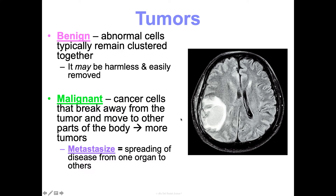Benign tumors can be harmless and easily removed — my father has had benign skin cancer tumors cut out. However, a benign tumor in the brain can still cause great harm and be difficult to remove, so benign doesn't always mean not harmful, just that it's contained. Malignant is where the cancer has spread — my mother had breast cancer that spread to other parts of her body, which is why she had to go through chemotherapy that affected her whole body.